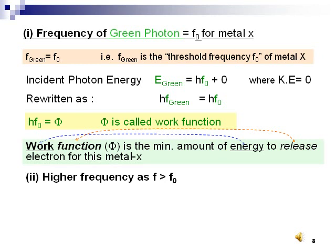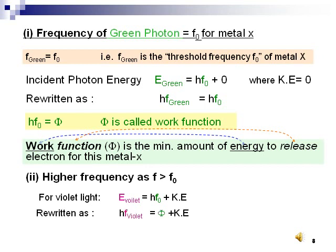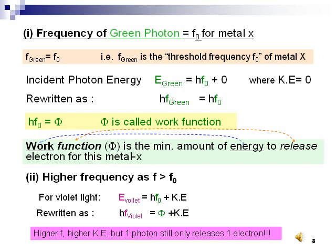Since violet light carries higher photon energy, the equation can be expressed as E equal to hf₀ plus KE or equal to work function plus KE. As long as the frequency is higher than the threshold frequency, higher frequency will give higher kinetic energy.